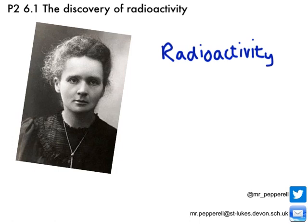A radioactive substance gives out radiation because it has an unstable nucleus, and it becomes stable by emitting radiation. We're going to explore that idea a bit more in a later lesson, but Marie Curie was the first person to come up with this idea.